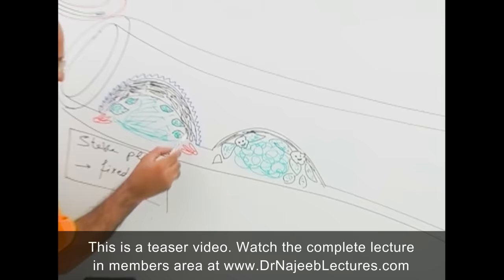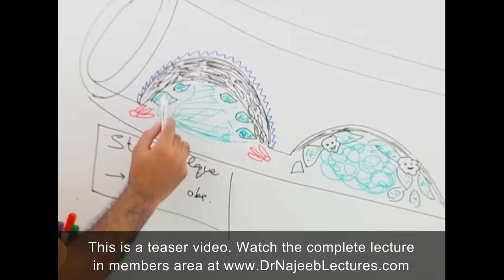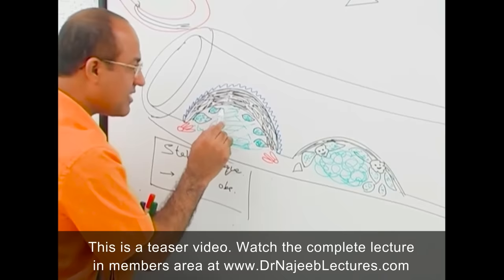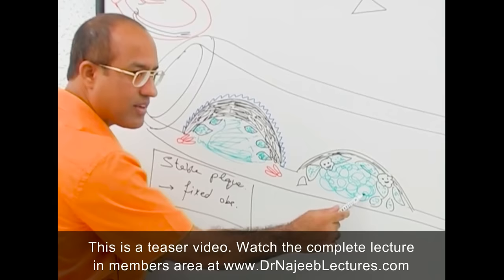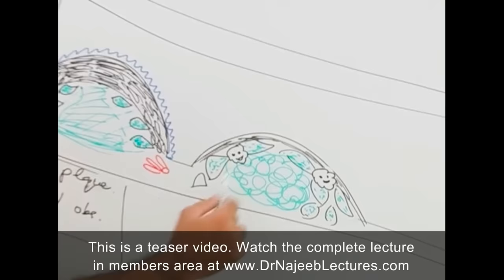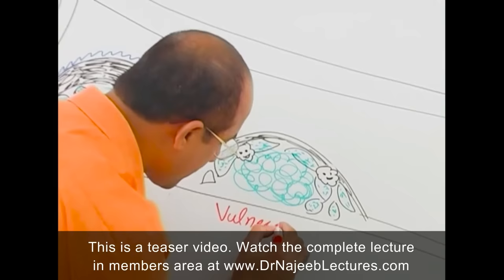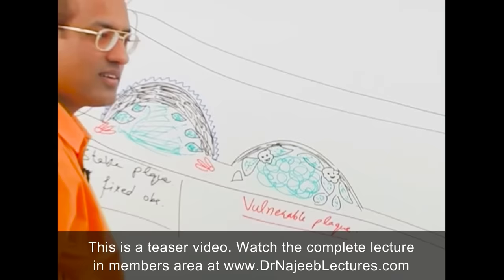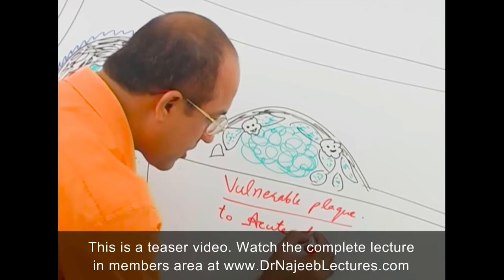Comparing plaque number one (stable) with plaque number two (vulnerable): stable plaque has a thick fibrous cap, less foam cells, less macrophages, less fat. Vulnerable plaque has a thin fibrous cap, more foam cells, more macrophages, more fat. The vulnerable plaque is susceptible to acute disruptions at any time — never to be trusted.